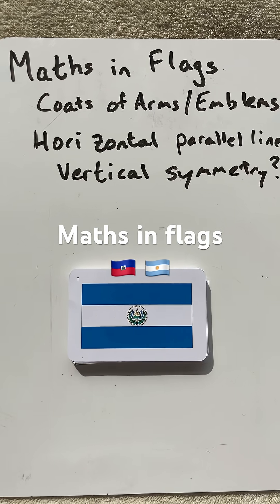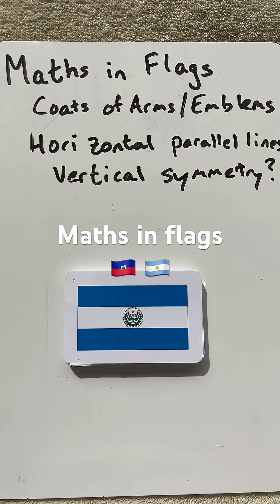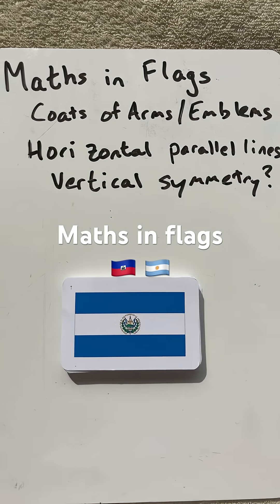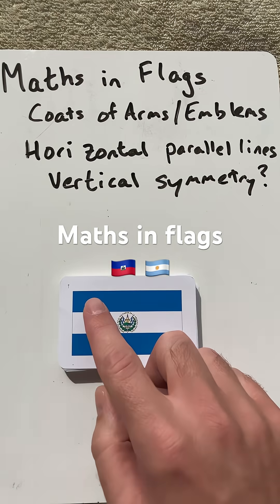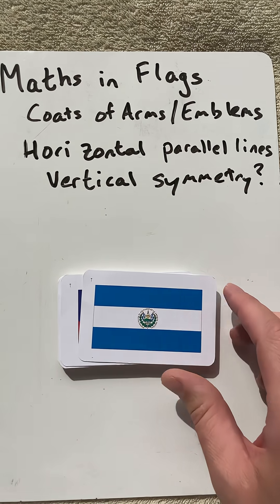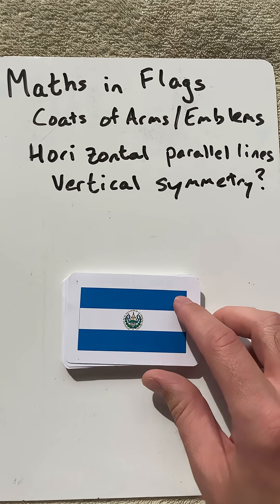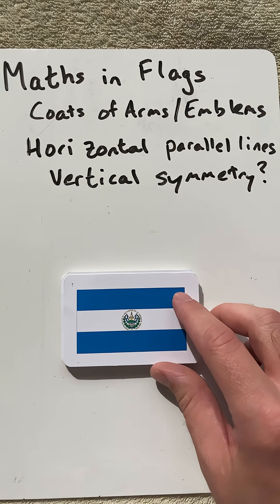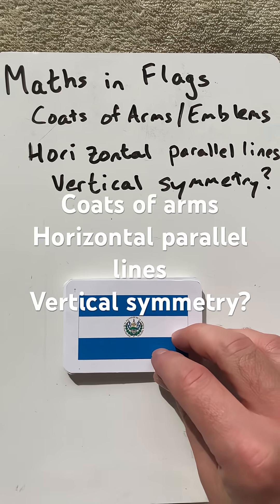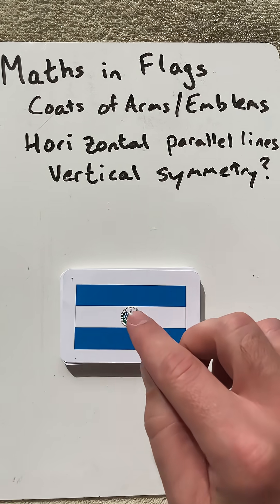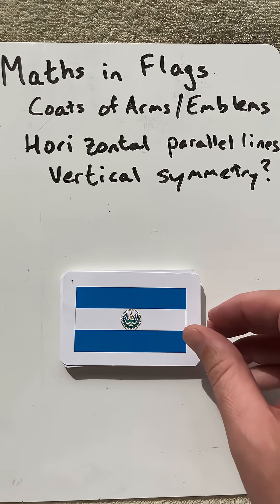Hello and welcome to Mart Maths, doing another Maths in Flags, this time looking at those that have horizontal parallel lines, as well as coats of arms or emblems, and we want to see whether they still have vertical symmetry.